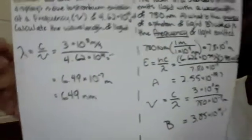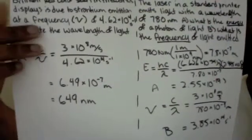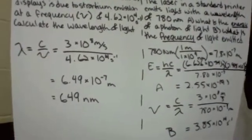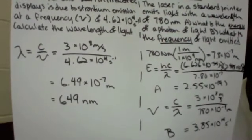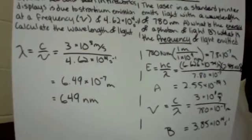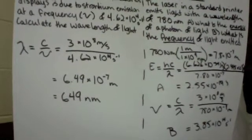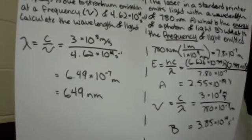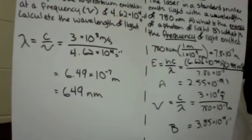So now we have two practice problems using the important relationships of wave, light waves. For this first one over on this side, brilliant red color seen in fireworks displays is due to strontium emissions at a frequency of 4.62 times 10 to the fourteenth. Calculate the wavelength of light. So as we said before, the speed of light equals wavelength times frequency. So rearrange that, we have wavelength equals the speed of light divided by frequency.